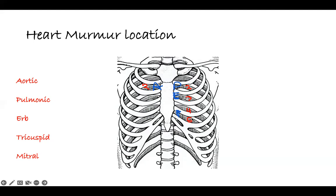And then the mitral is the same thing but displaced a little bit down. So if you look at it, it looks like a pattern going down — 'PET' going vertically, and then when you go down again diagonally it's 'ATM.' So if you draw it and you see that view, it's ATM. This is PET vertical, this is ATM on the same side.